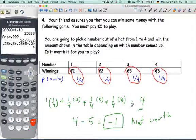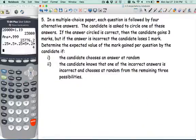Alright, number five. Multiple choice paper. We don't do a lot of these. In a multiple choice paper, each question is followed by four alternative answers. The candidate is asked to circle one of these answers. If the answer circled is correct, then the candidate gains three marks, but if the answer is incorrect, the candidate loses one mark. Determine the expected value of the mark gained per question by the candidate if the candidate chooses an answer at random.